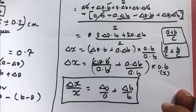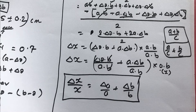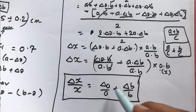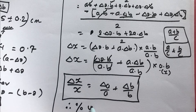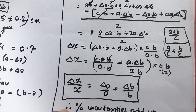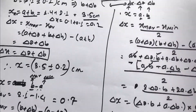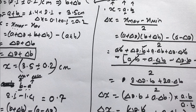So the key relation is: delta x over x equals delta A over A plus delta B over B, where delta A over A is fractional uncertainty in A and delta B over B is fractional uncertainty in B. Percentage uncertainties add up for both multiplication and division. You can verify this for division yourself and will find the same result.